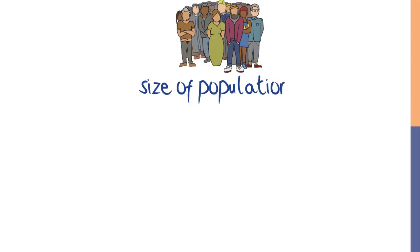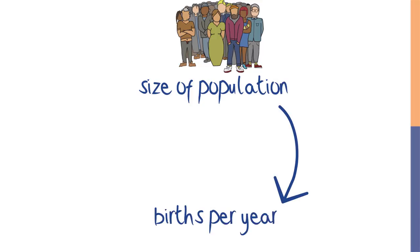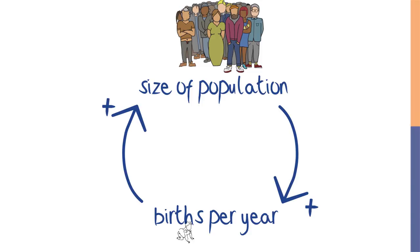Natural systems have reinforcing feedback loops too. As population grows, there are more births, increasing the size of the population even more.